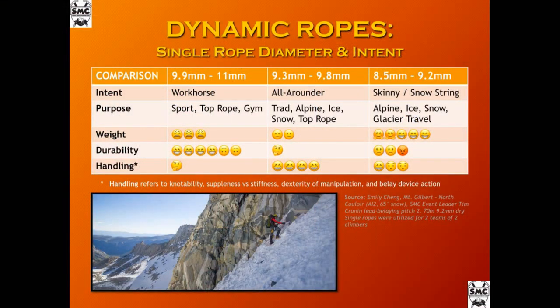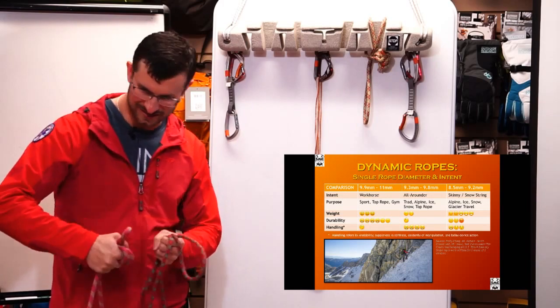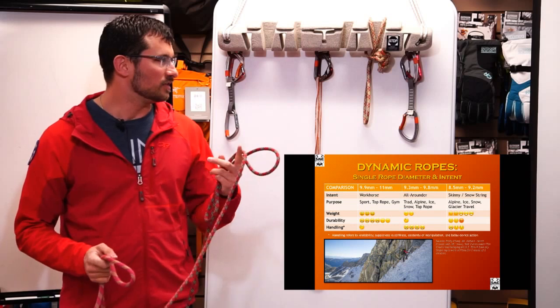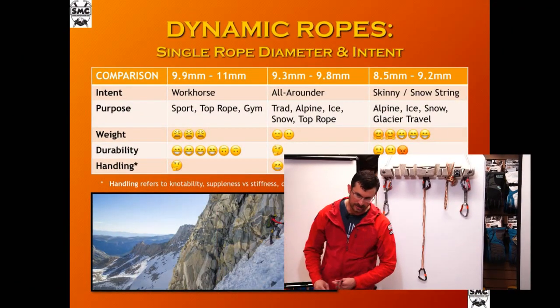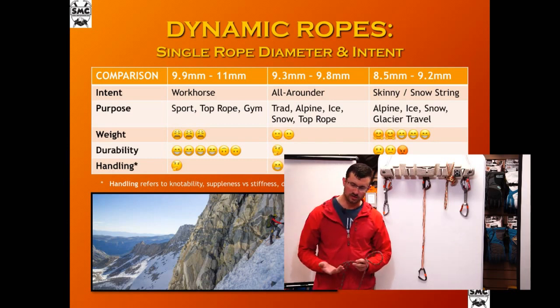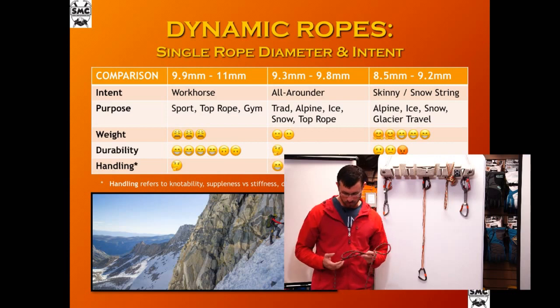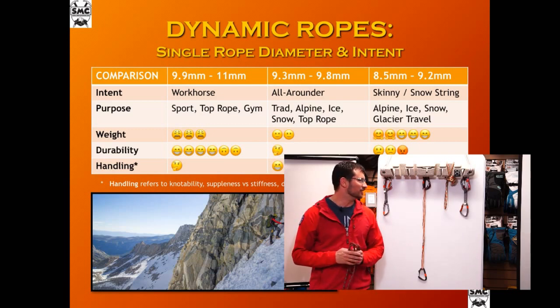For dynamic single ropes, there are pros and cons to each sizing. The workhorse 9 to 11 millimeter ropes are quite heavy but durability is excellent — pretty much bombproof. Handling can be tricky because they're so fat; sometimes hard to put in a belay device or tie knots. The all-arounder ropes in the 9.3 to 9.8 range are what most people use for trad, alpine, ice, snow, or even top rope. Handling is usually great — they're known for being very supple. Durability depends on usage, and weight is much better, sometimes a couple pounds lighter, making them more friendly for long backcountry situations.